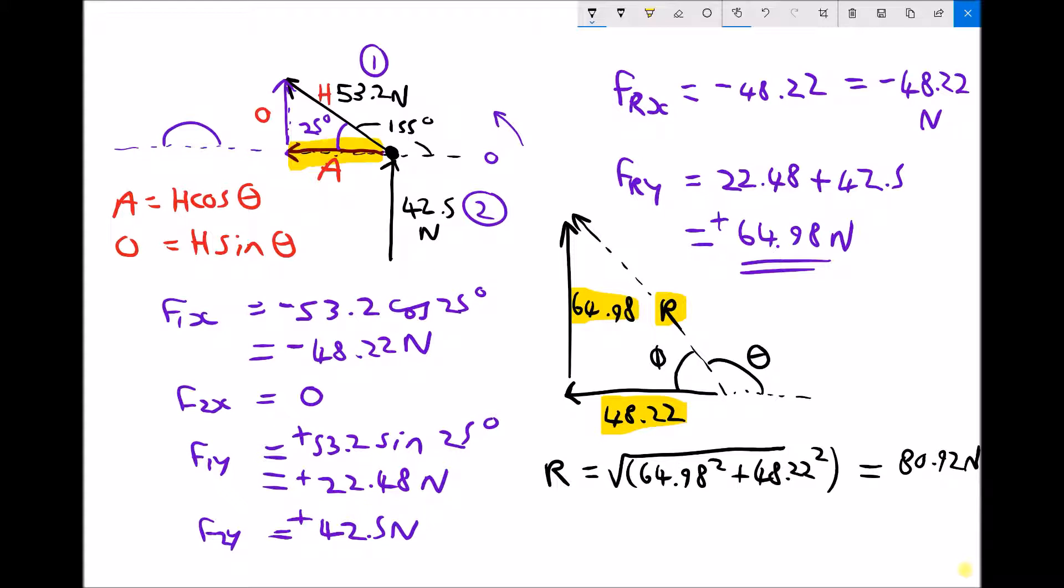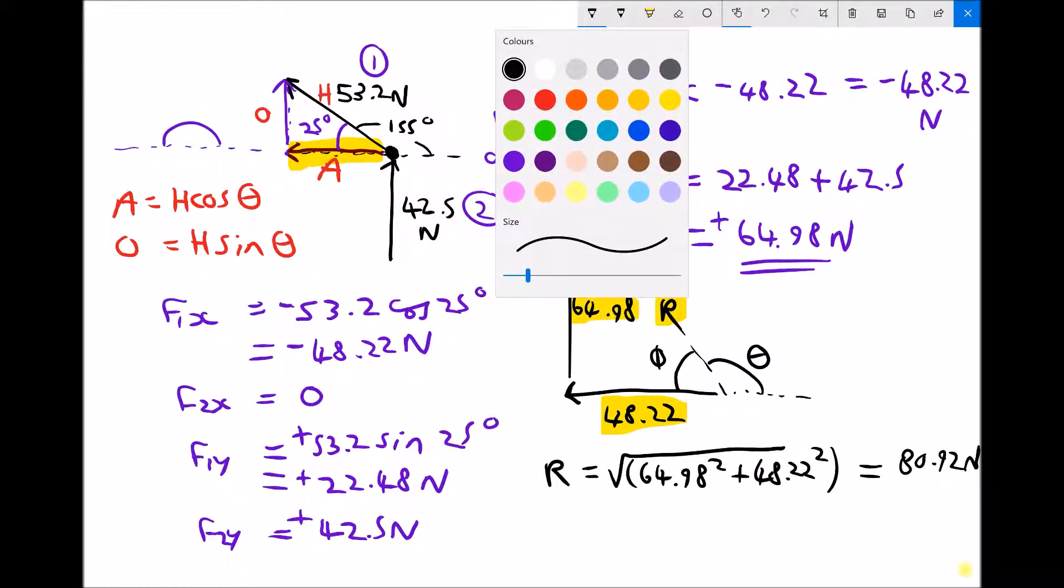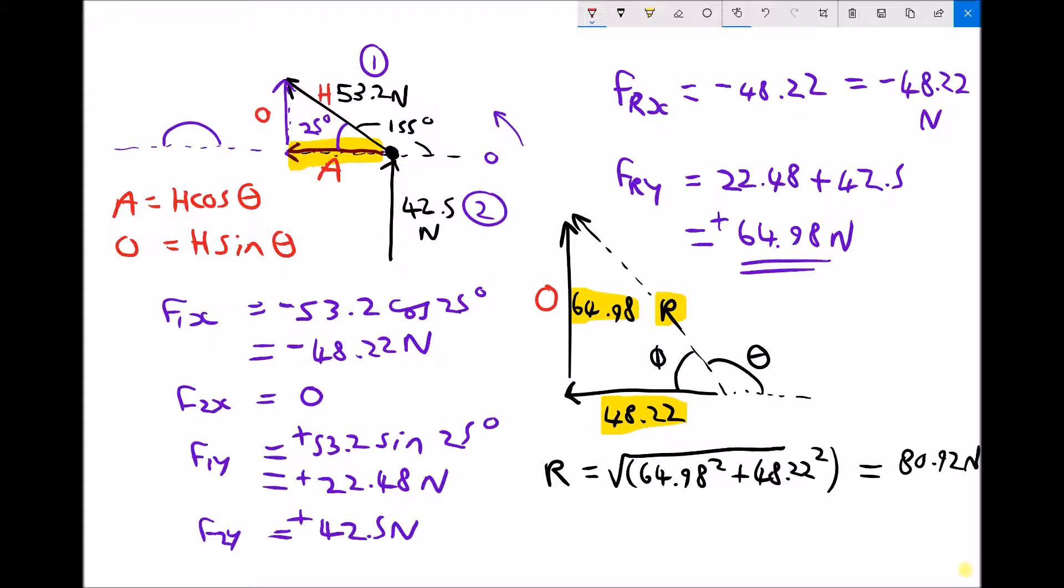And our angle is found by doing tan to the minus one opposite over adjacent. And as we said before, opposite is opposite the angle and adjacent is the other shorter side. So just remember, we're finding phi here, not theta. Phi equals tan to the minus one opposite 64.98 over adjacent 48.22, giving us an angle phi equal to 53.42 degrees.